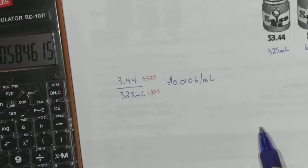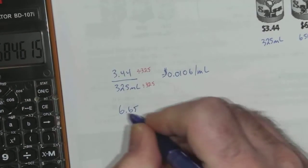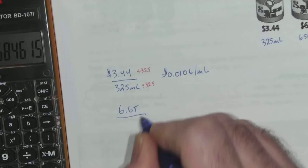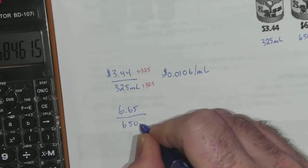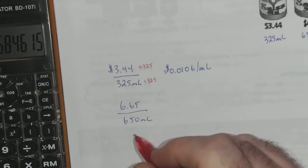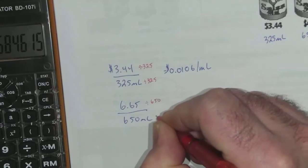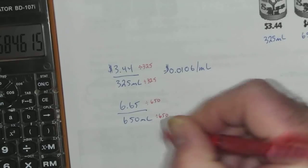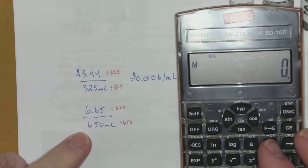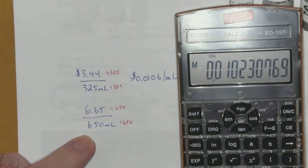The next one was $6.65 for a 650 milliliter container. So again, I'm going to divide the top by 650 and bottom by 650. When you do that, you get 6.65 divided by 650.